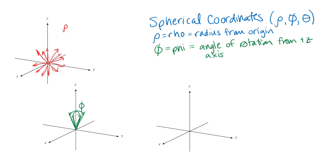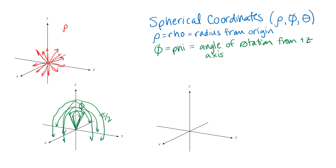For a phi value that's fairly small — say pi over 6, a 30-degree rotation downward from the positive Z axis — you get a narrow cone. If you rotate farther, phi equals pi over 2 puts you in the XY plane. If phi is larger than pi over 2, you end up below the XY plane. Rotating all the way from the positive Z axis down to the negative Z axis is a rotation of pi.